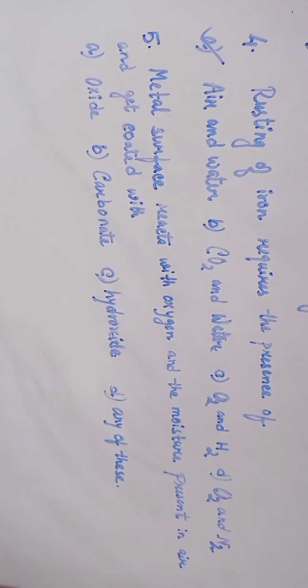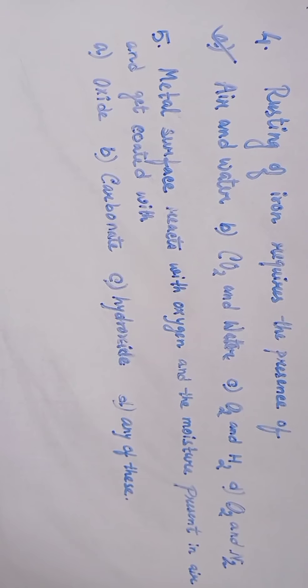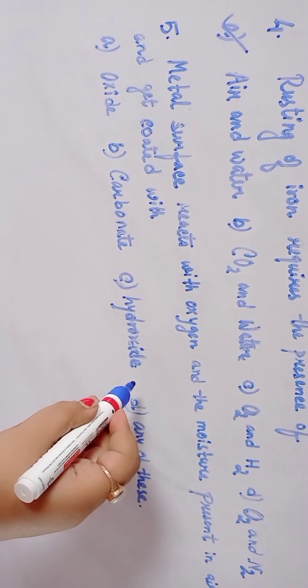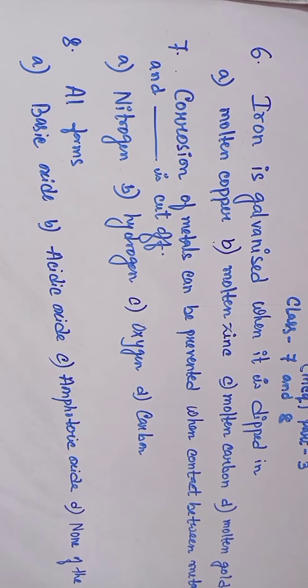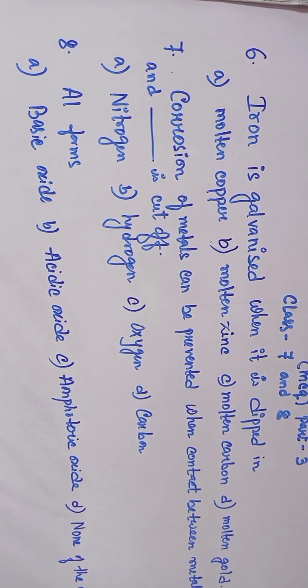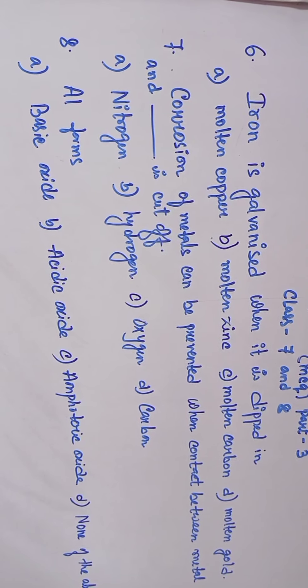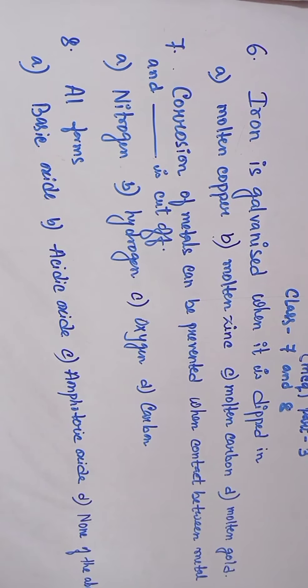Question 6: Iron is galvanized when it is dipped in... Option A: molten copper, Option B: molten zinc, Option C: molten carbon, Option D: molten gold. Option B is the answer: molten zinc. Iron is galvanized when it is dipped in molten zinc.